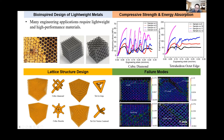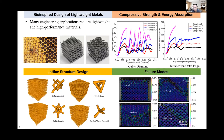We used digital image correlation (DIC) technology to observe failure modes during compression loading tests. I show four particular failure modes: crash at the top of the lattice structure, multiple diagonal cracks, buckling at the bottom, and a single diagonal crack. By combining mechanical testing with DIC techniques, we established structure-property relationships, which allows us to further design and optimize novel bio-inspired structures.